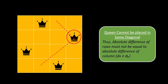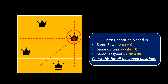Third is the diagonal condition. How do you find out the diagonal element? For a diagonal element, we move the same amount in x and the same amount in y — that becomes the diagonal. So the absolute difference between the rows of the queens must not be equal to the absolute difference of the columns. That is, dx should not be equal to dy. So these are the three conditions: dx should not be zero, dy should not be zero, and dx must not be equal to dy.